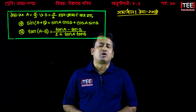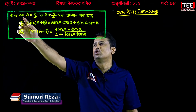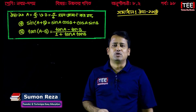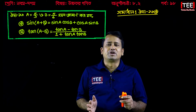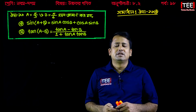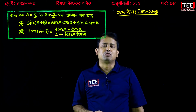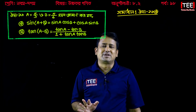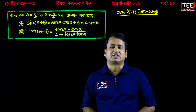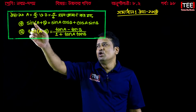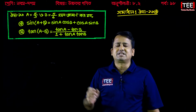The answer to this question: a is equal to pi by 3, and b is equal to pi by 6. I will be able to do this question and give you the answer.